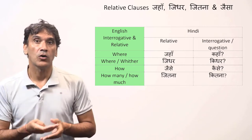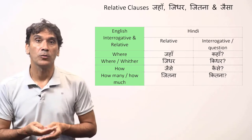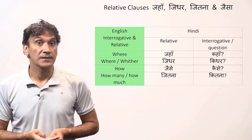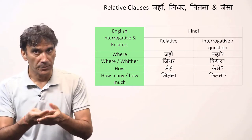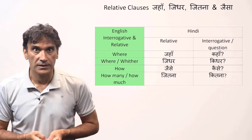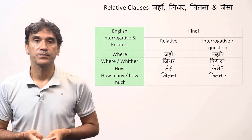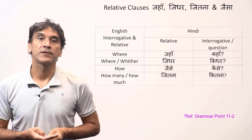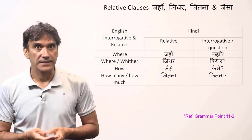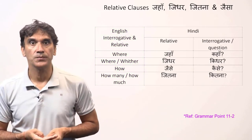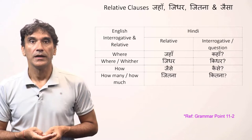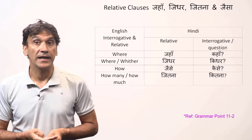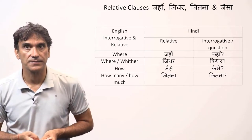How, how many, how much, when — these English words are used in a sentence, but when they do not make a question, they are in the function of a relative clause. We have explained the relative clause in detail in grammar point 11.2. Here we will take these relative words and use them in example sentences.